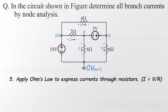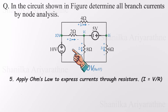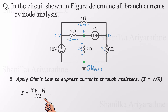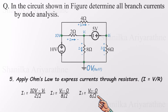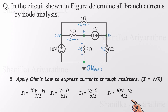In step 5, we apply Ohm's Law and express each current in terms of the node voltages. Current equals voltage difference across a resistor divided by its resistance. For the 2-ohm resistor: I1 = (10 − V1) / 2. For the 8-ohm resistor connecting V1 to ground: I2 = V1 / 8. For the 6-ohm resistor: I3 = V2 / 6. For the 4-ohm resistor: I4 = (10 − V2) / 4. All four branch currents are now written in terms of V1 and V2.